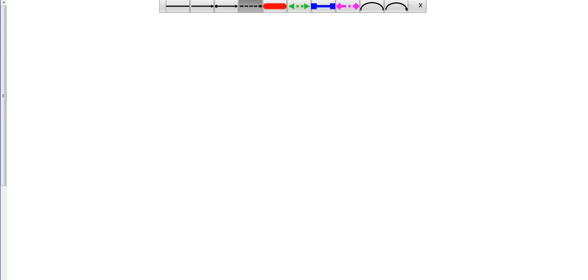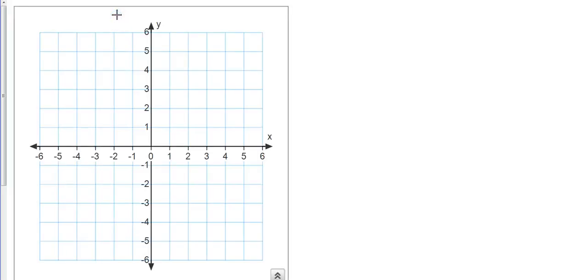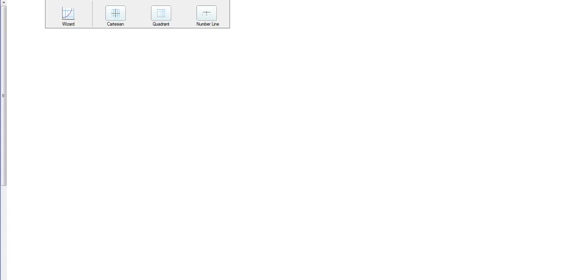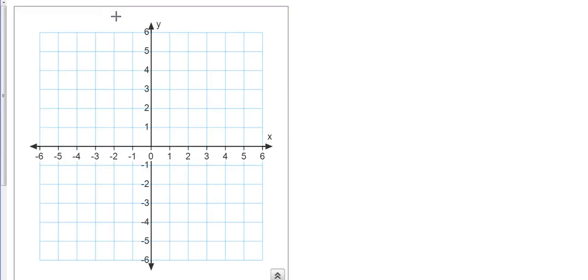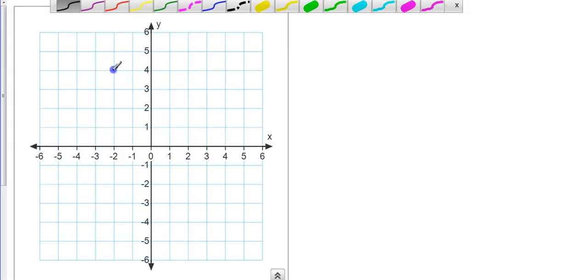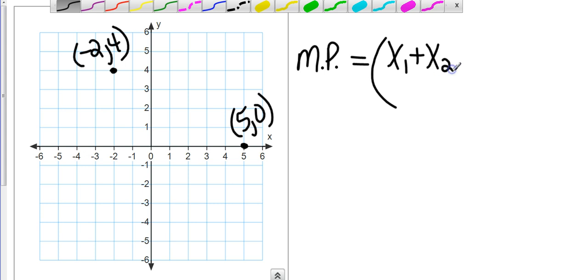So what if it's on a coordinate plane? Let's say I have negative 2, 4 and 5, 0. The midpoint on a coordinate plane is adding the x values together and dividing by 2. That's going to give me the x-coordinate of the midpoint. And then obviously it's going to be the same equation or formula, just using y's for the y-coordinate.